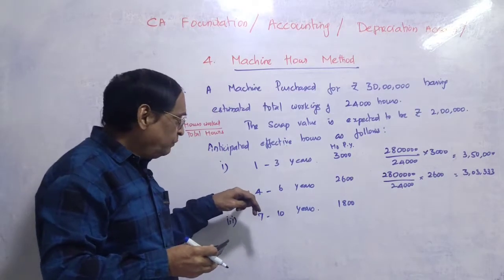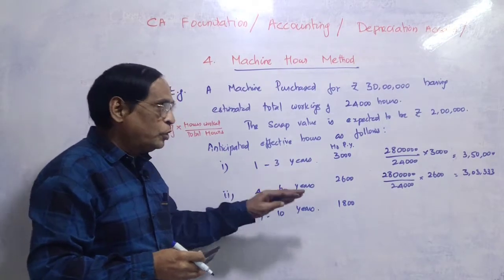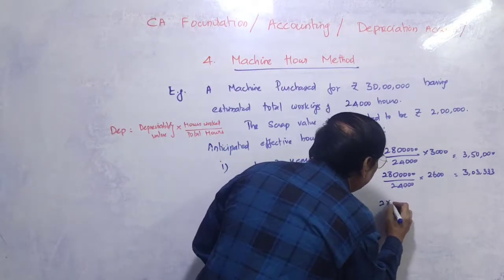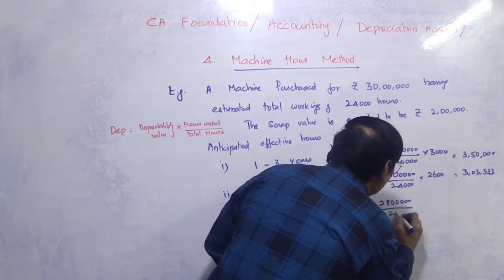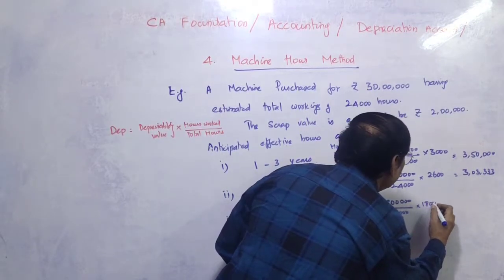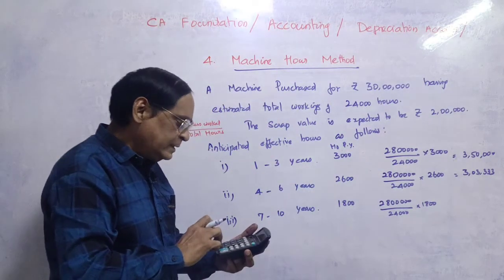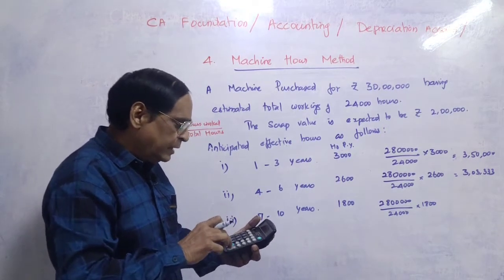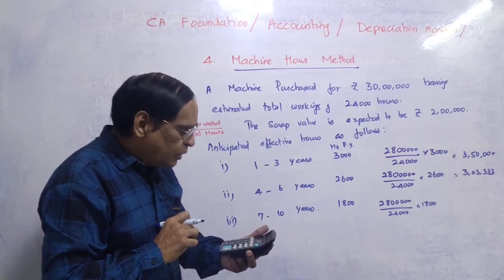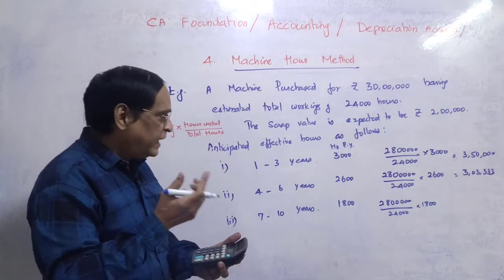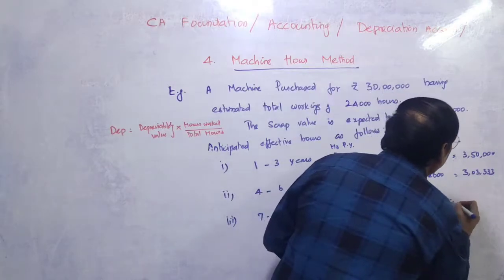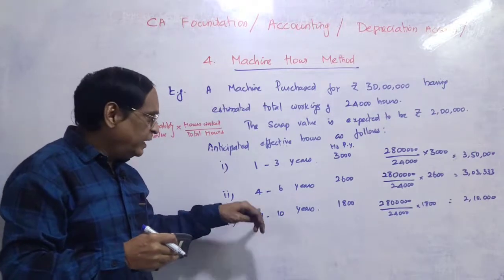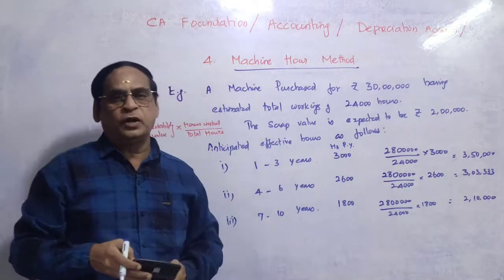For years 7 to 10, if actual hours are 1,800 hours, then depreciation = 28 lakhs ÷ 24,000 × 1,800 = 2,10,000 rupees per year. So the total depreciation across all years adds up to 28 lakhs, which equals the full depreciable value.